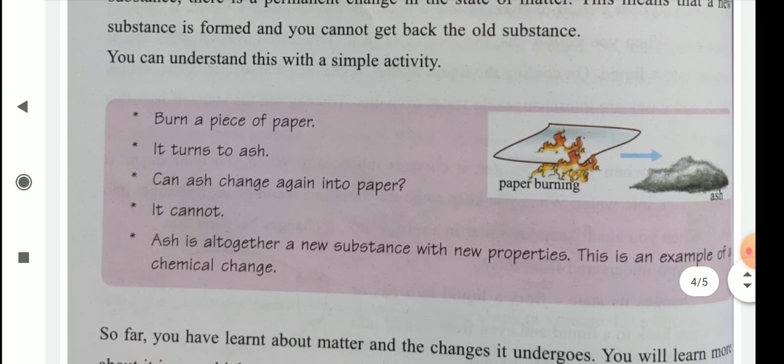For example, you see, burn a piece of paper. It burns to ash. Can ash change again into paper? It cannot. Ash is altogether a new substance with new properties. This is an example of chemical change.